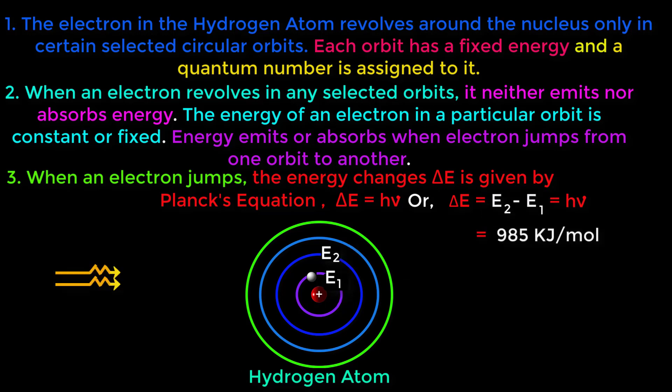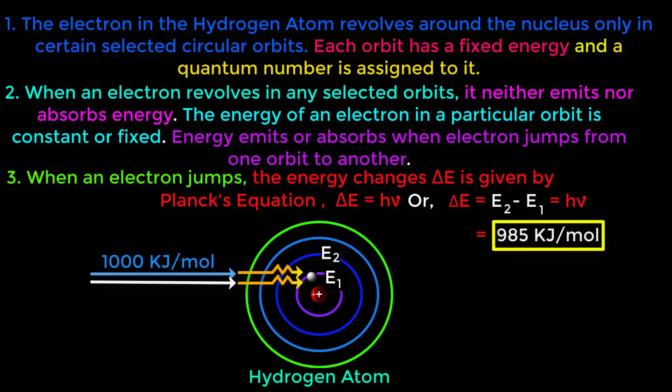See, energy is providing to this atom with this photon energy from outside. The value of this photon energy is 1000 kilojoule per mole. On the other hand, the value of this photon energy is 985 kilojoule per mole. Between these two different values of energy, do you know which energy this electron will absorb?